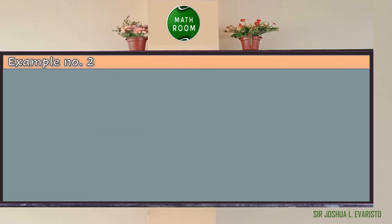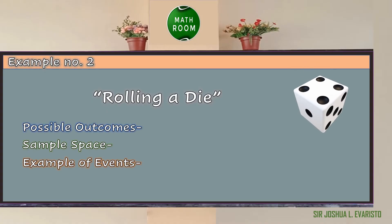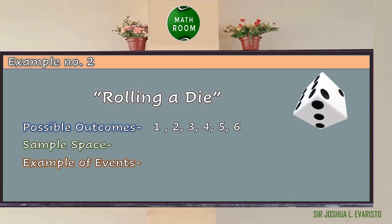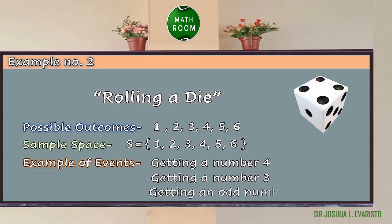How about in rolling a die? What are the possible outcomes? We have six possible outcomes: 1, 2, 3, 4, 5, and 6. So the sample space can be written as S = {1, 2, 3, 4, 5, 6}. Examples of events are getting a number 4, getting a number 3, getting an odd number, and so on.